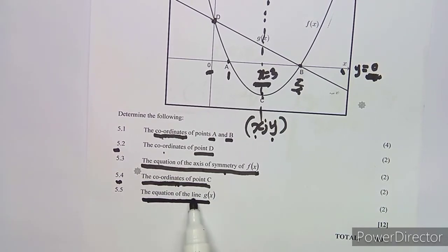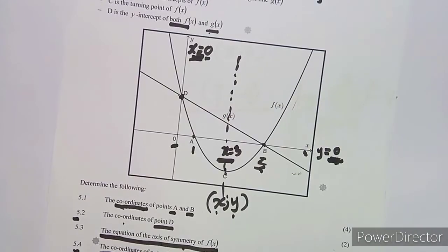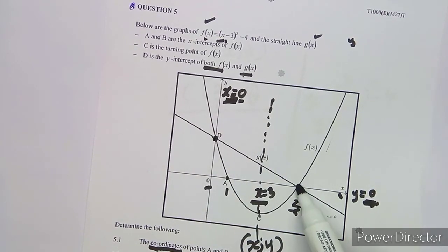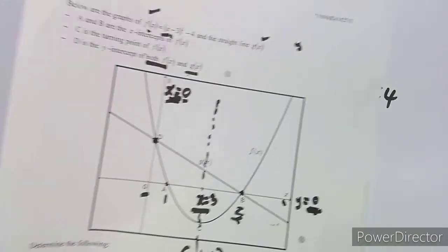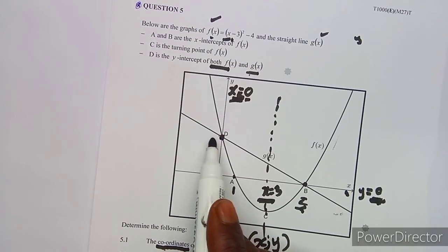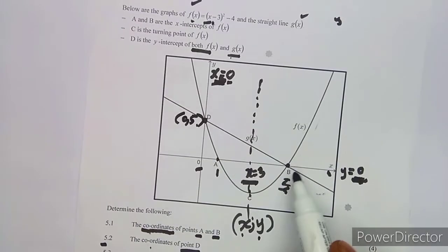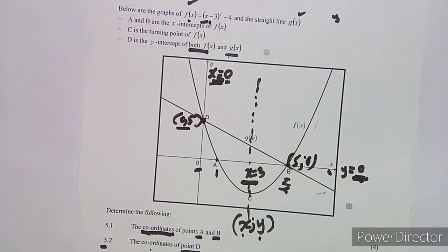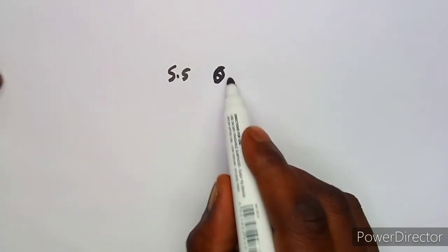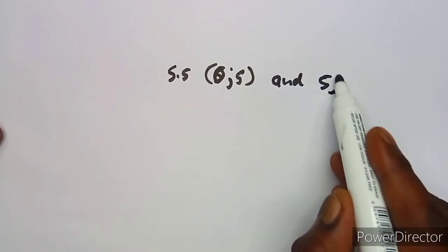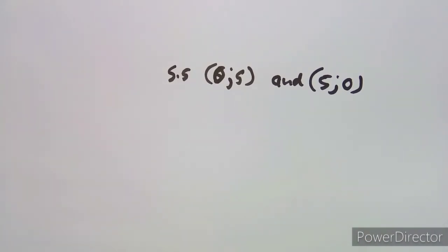On question 5.5, we need the equation of the line g(x). From the graph, g(x) is a straight line passing through point D and point B. We already know D is (0, 5) and B is (5, 0). Since we have two points on the line, we can find the equation of the straight line using those two points.